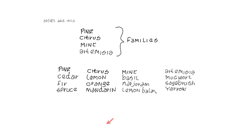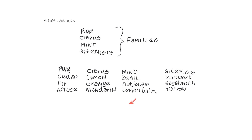The pines include cedar, fir, and spruce, and are generally tonic and balancing. The citrus family — lemon, orange, and mandarin — are generally calming. Mint family oils — basil, marjoram, and lemon balm — are generally anti-spasmodic and digestive. Artemisia family oils are generally protective against anxiety.